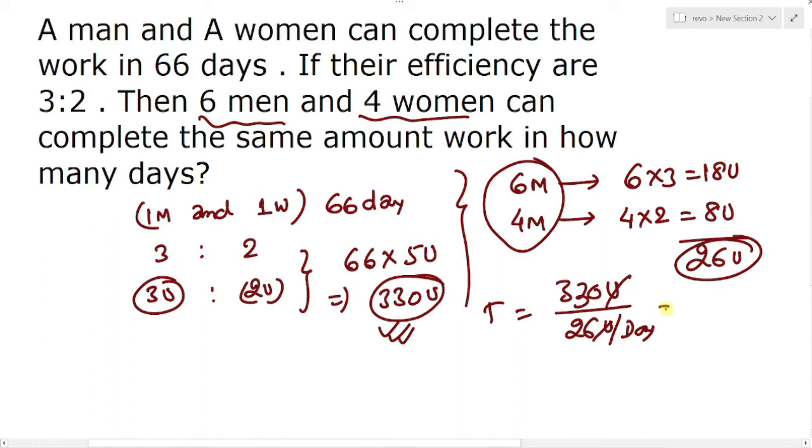Units units cancelled, you will get simply 330 by 26 days. If you will simplify it will come 13, and it will come simply 165, so 165 by 13 days, that should be the answer.